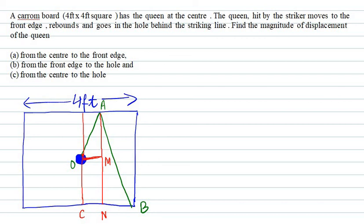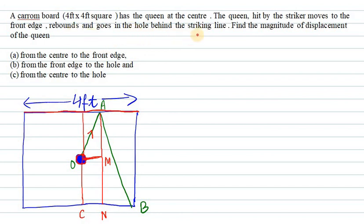Let's start with this question. A carom board four feet by four feet square has a queen at the center. The queen, hit by the striker, moves to the front edge — that part of the carom board — toward point A, rebounds, and goes into the hole behind the striking line at point B.